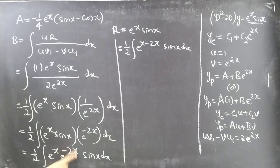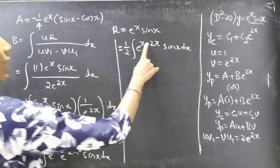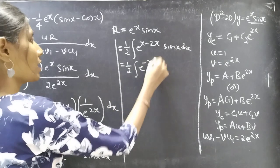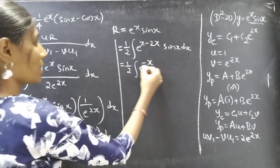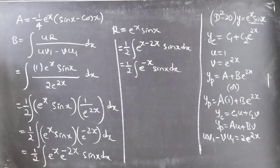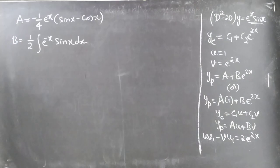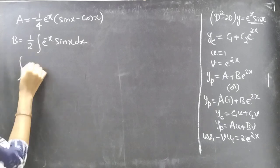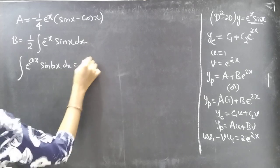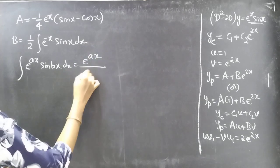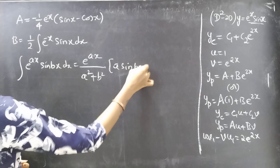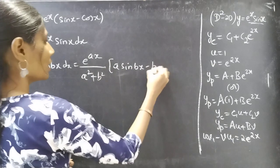We can write eˣ · e^(-2x) = e^(x-2x) = e^(-x). So b = 1/2 · ∫e^(-x) sinx dx. Using the formula ∫e^(ax)sin(bx) dx = e^(ax)/(a²+b²) · (a·sinx - b·cosx), here a = -1 and b = 1.